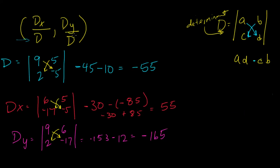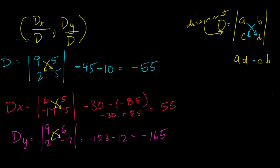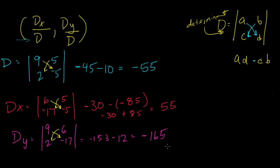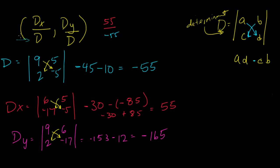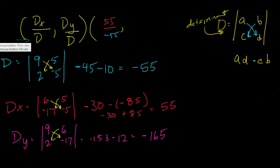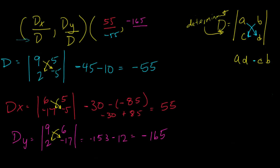Now our solution should be d of x divided by d, and d of y divided by d. So we'll have our d of x is 55 divided by our d, which was negative 55. And then our d of y should be negative 165 divided by our d, which was negative 55.